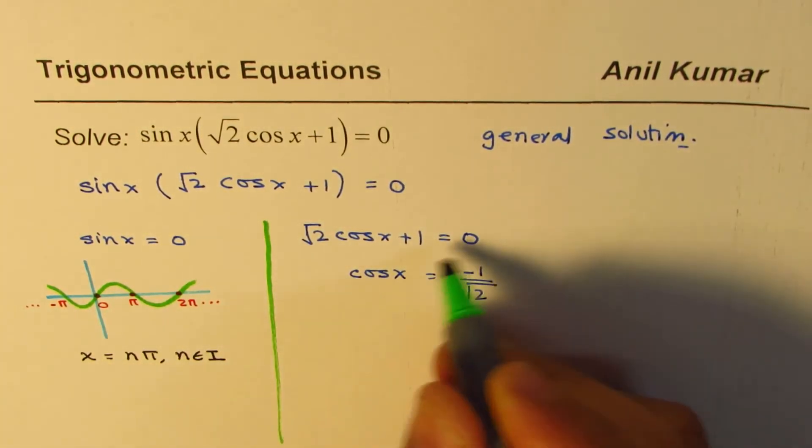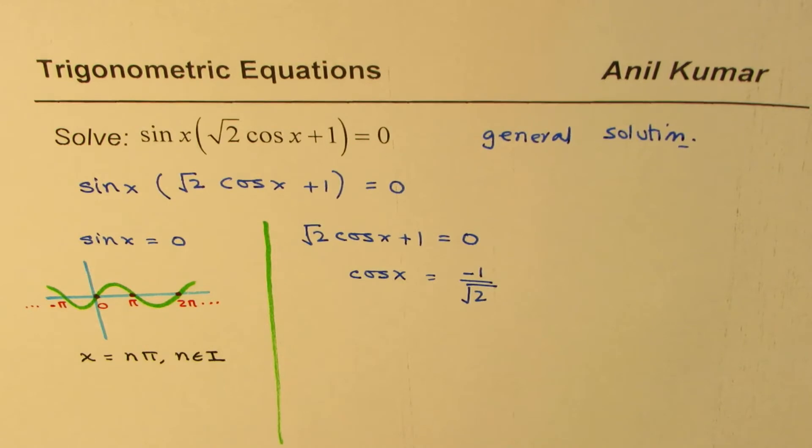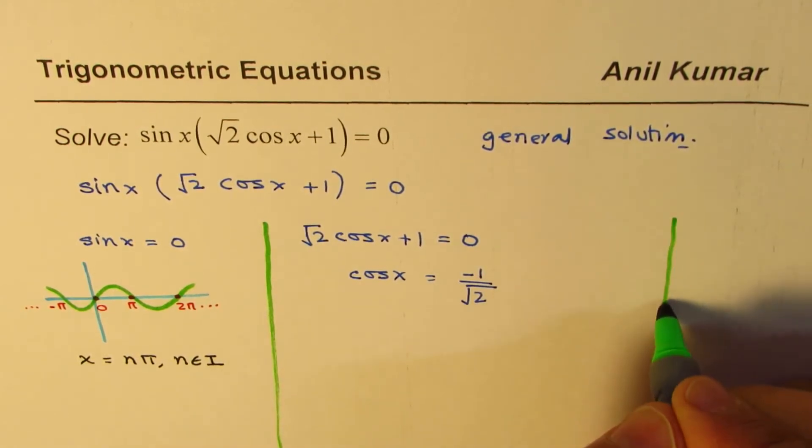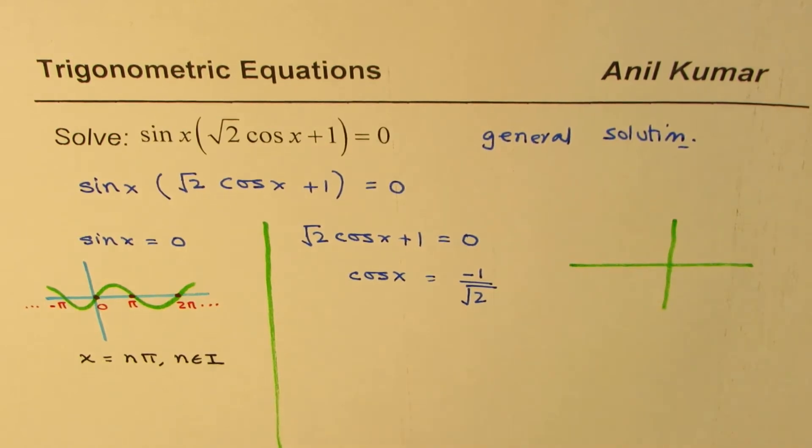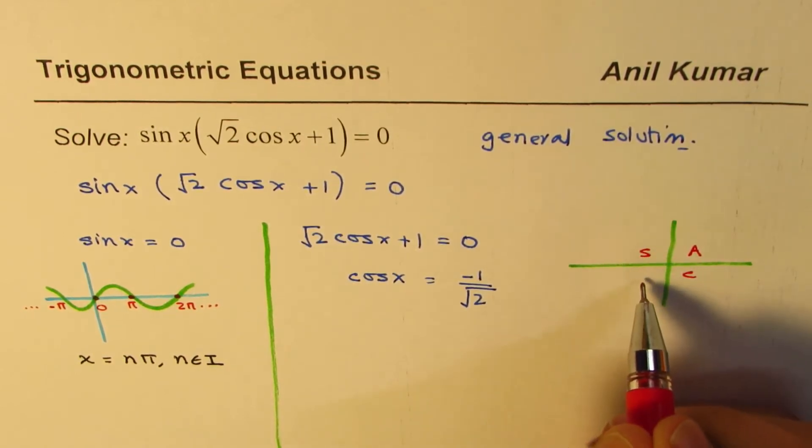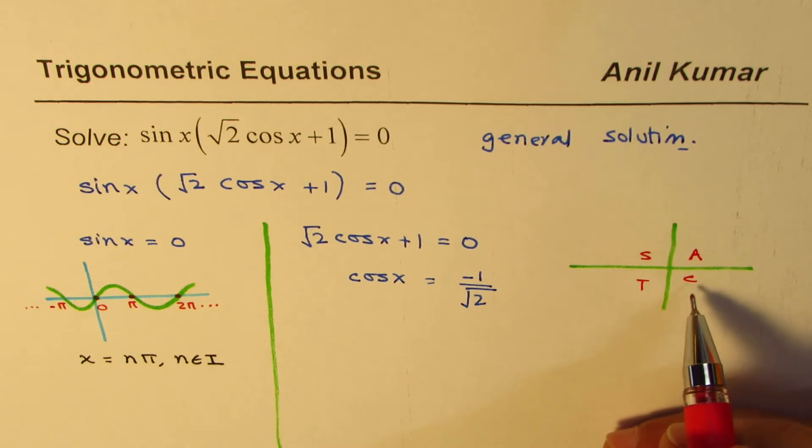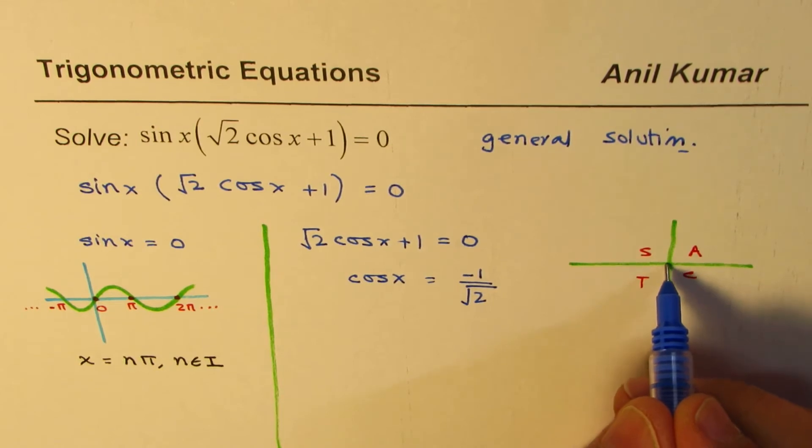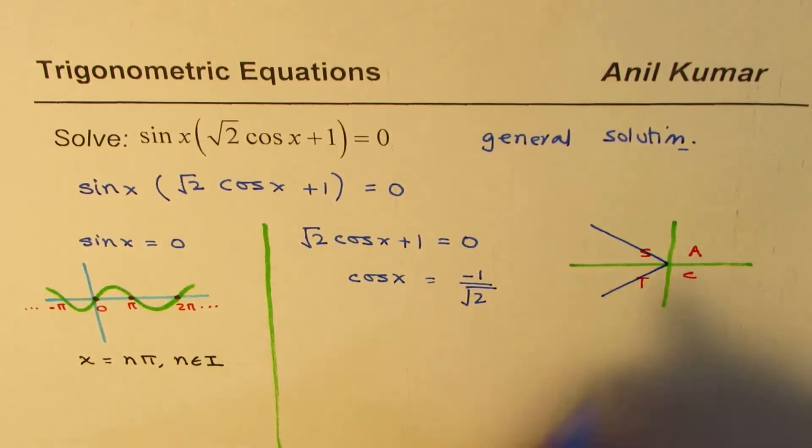Now let me see how to find solution of this one. When we say cos x is minus 1 over square root 2, that means that we are talking about solution in two quadrants. If you apply your rule about in which quadrant cos is positive, cos is negative, cos is positive in quadrant 1 and in 4. We are looking for negative value. That means we are looking for a solution in this quadrant or in that quadrant.